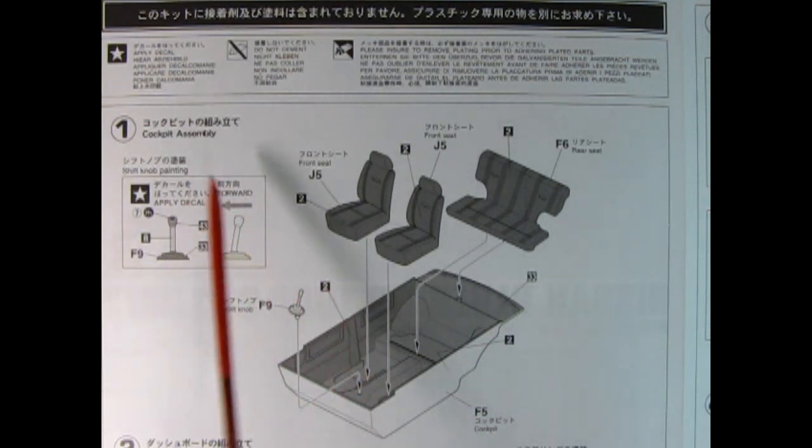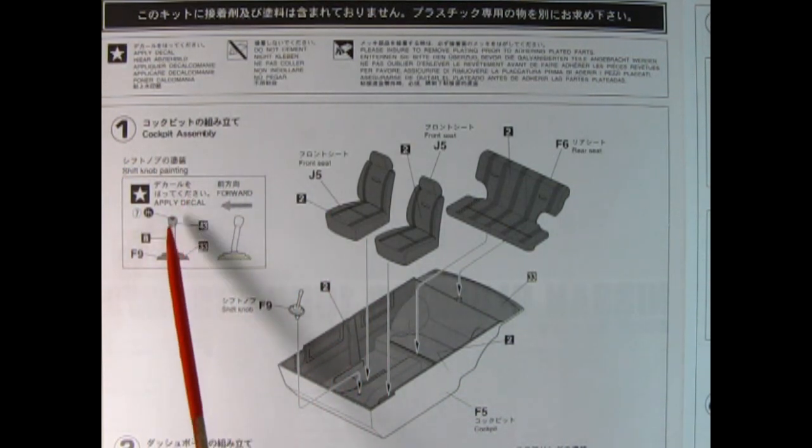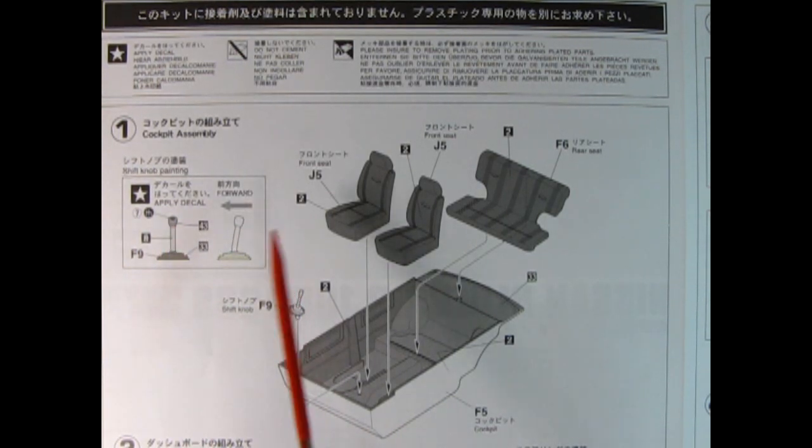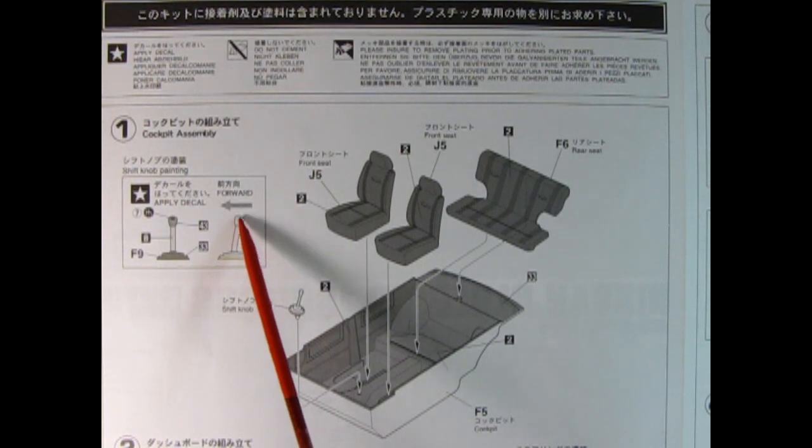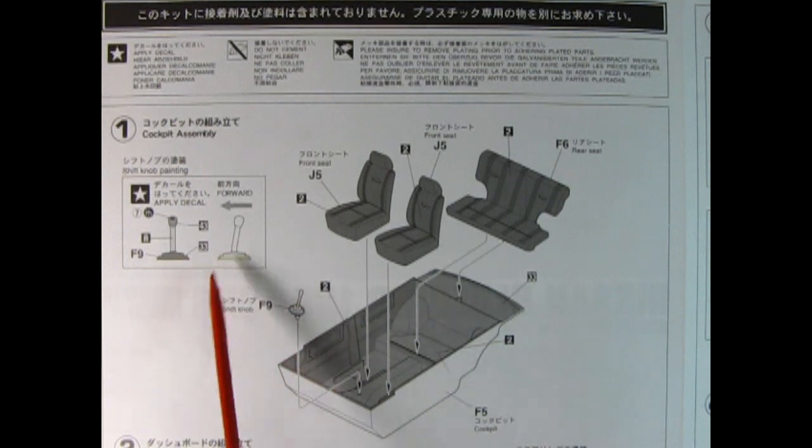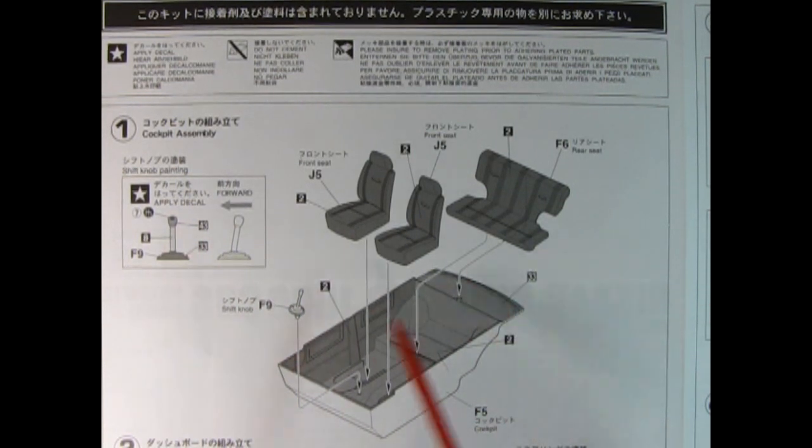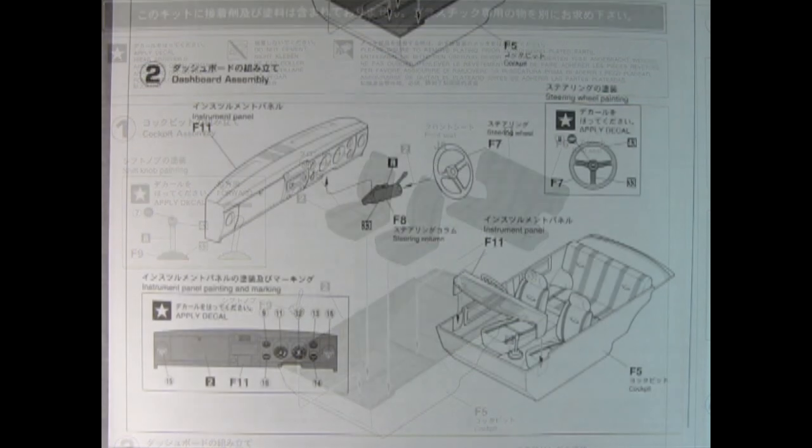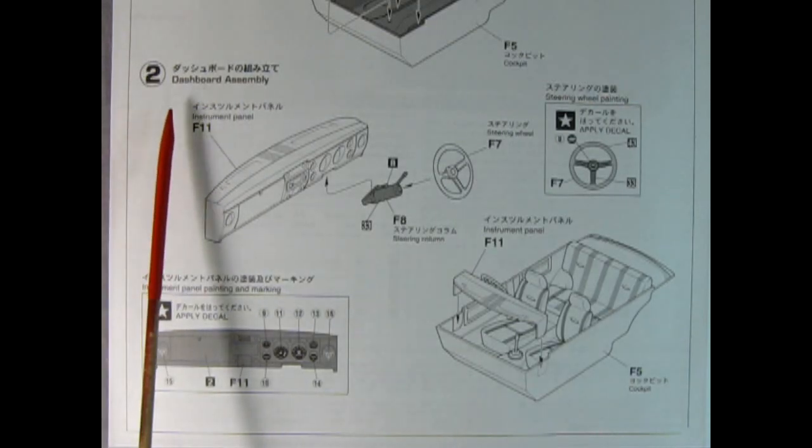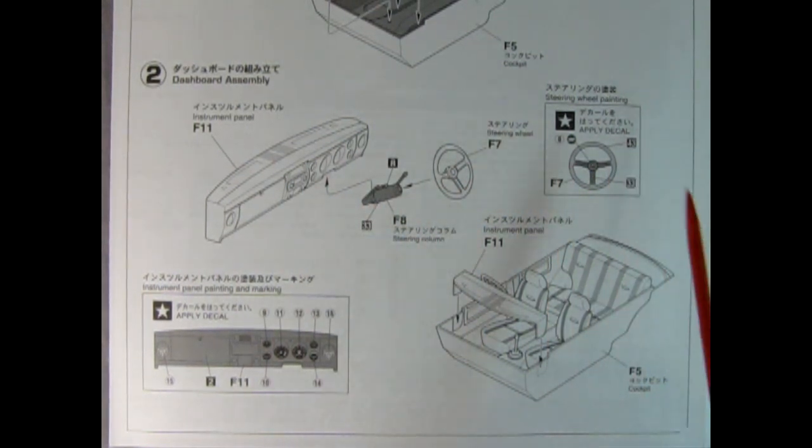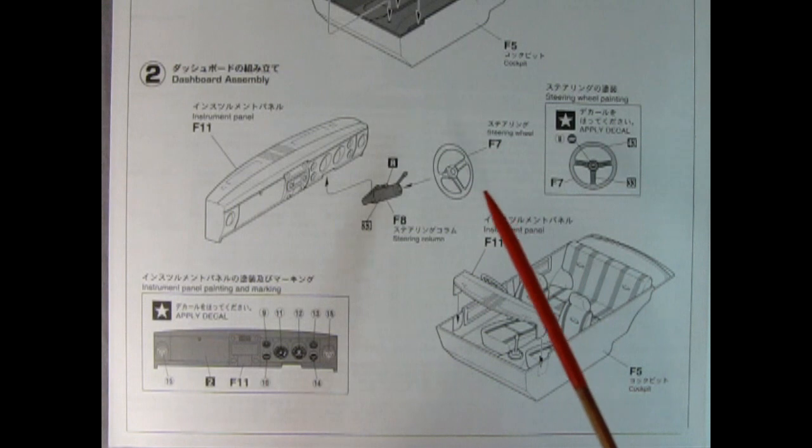To begin our assembly we're taking a look at panel one. We have the shift knob and it says to apply the little shift gate decal right on top of the stick. The shifter lever will go in here. You got a nice wonderful interior tub. You also have a back seat and two bucket seats in the front. In step two we see our dashboard assembly going in here with our dashboard, steering column and steering wheel. We also have some more decal application here.